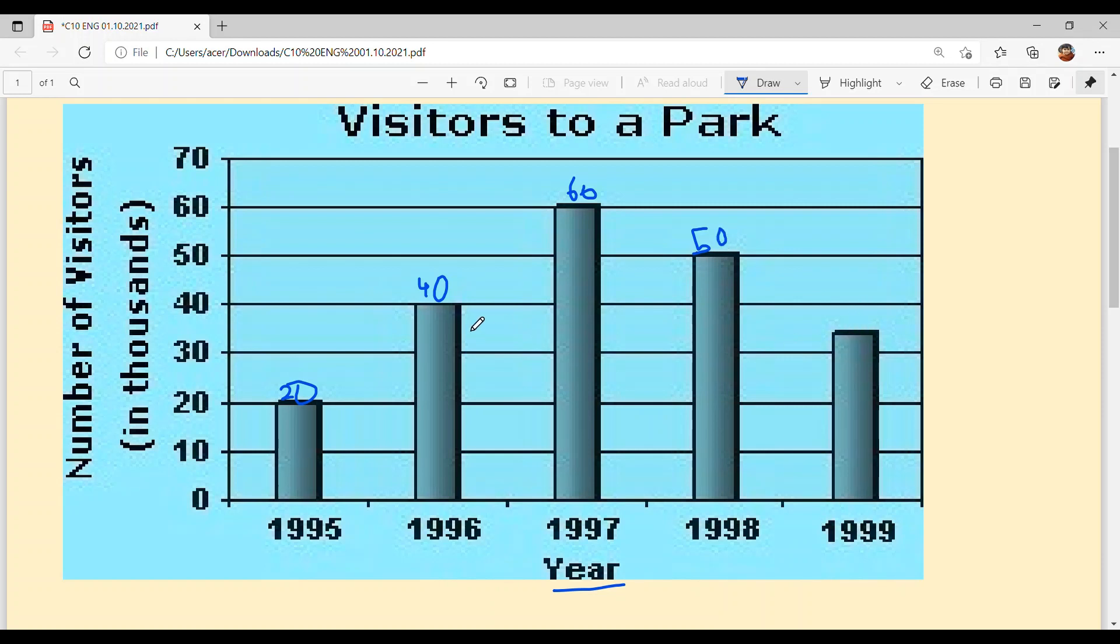And last, in 1999, let's see. The bar is between 30 and 40, so it's 35. Don't be confused, it's 35,000.